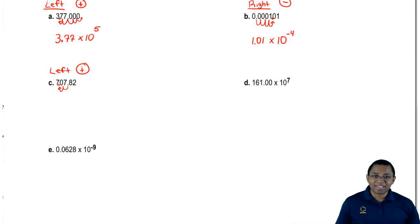We have to move it to the left. Remember, your exponent will be positive. Now, it's 7.0782 times 10 to the 2 because we had to move it two spaces to the left.